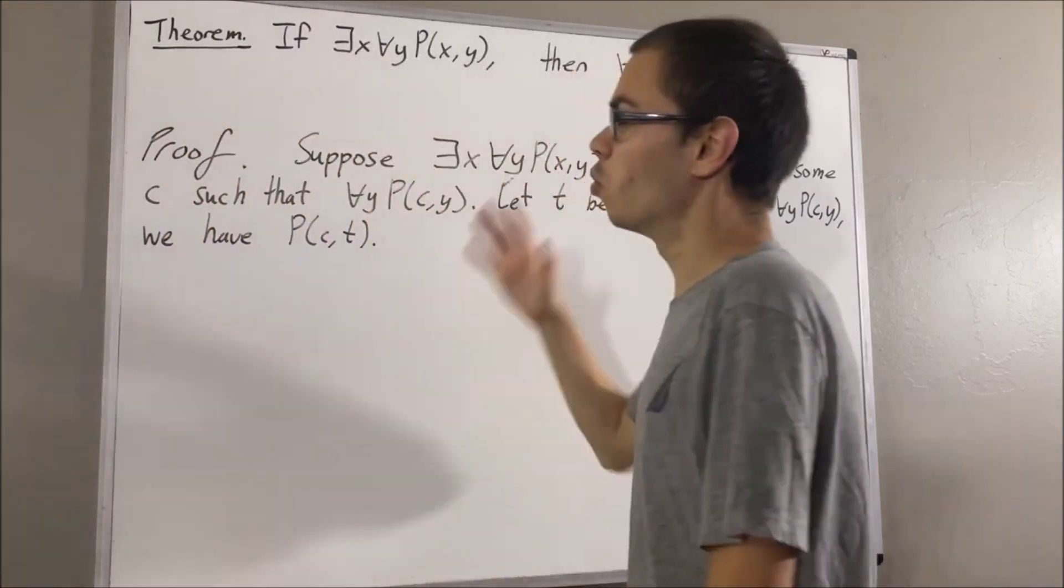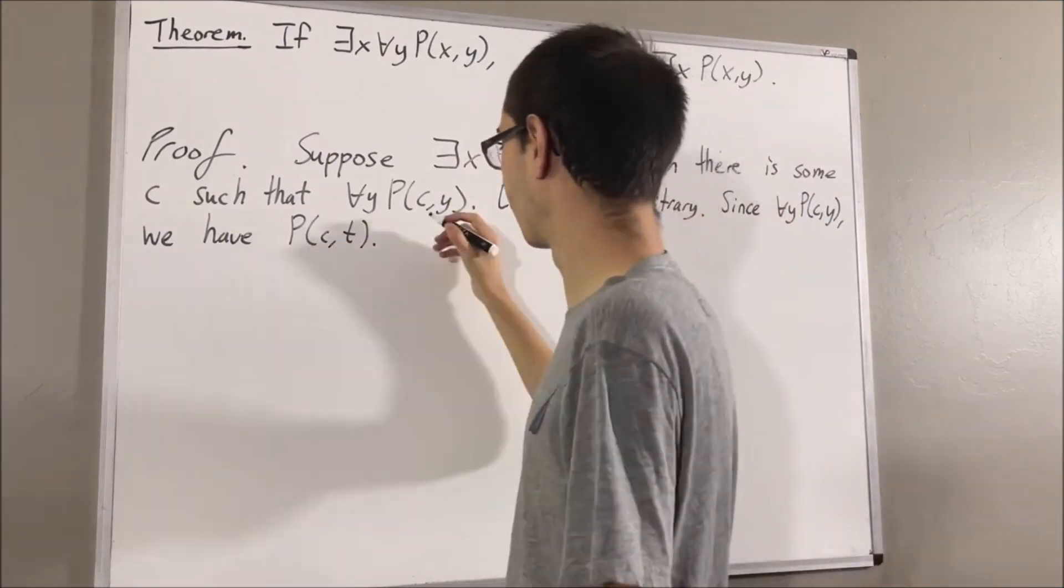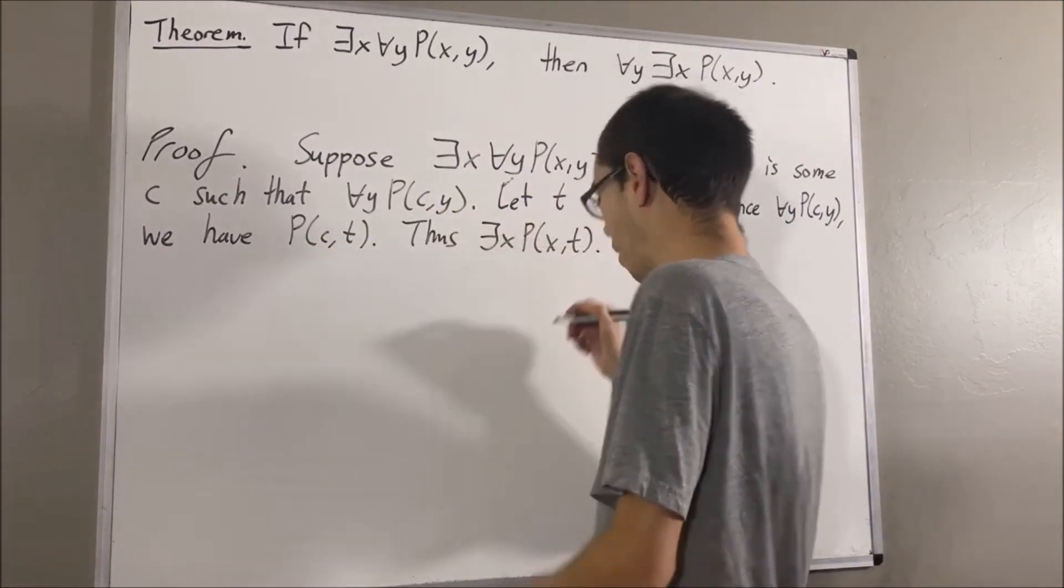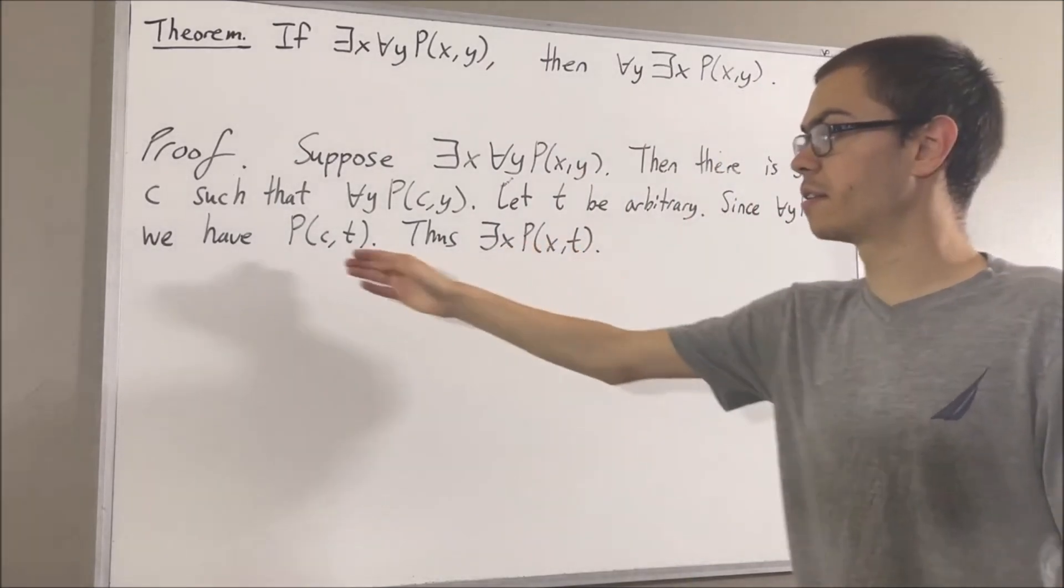But now we see that there's at least one object x such that P(x,t). Because in particular, if we take x to be c, then it works.